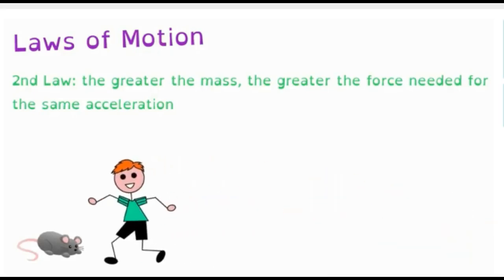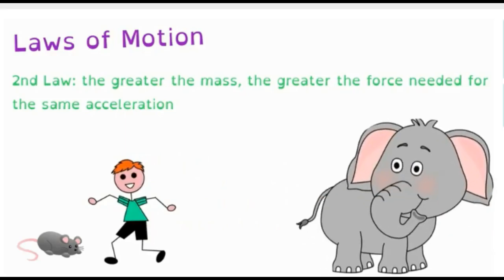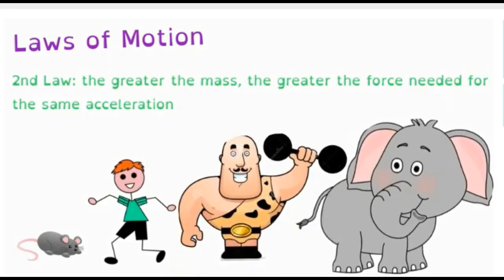So when you look at a mouse and a person, one of these has a lot more mass. Look at all these different options here. Which one's going to have a harder time getting going? Probably going to be that elephant.